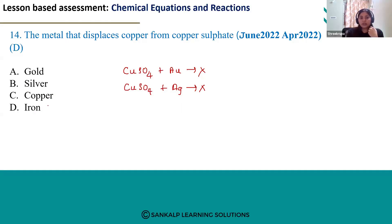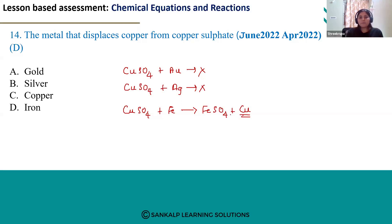But when you take iron, iron has more reactivity than copper, so it easily displaces copper from copper sulphate solution. We can observe copper metal here. So the correct answer for this question is option D, iron.